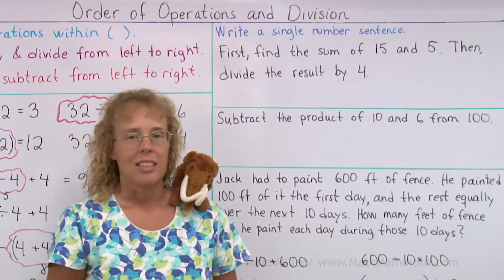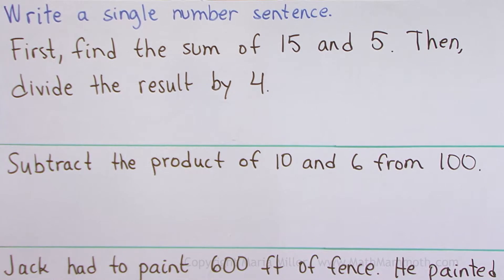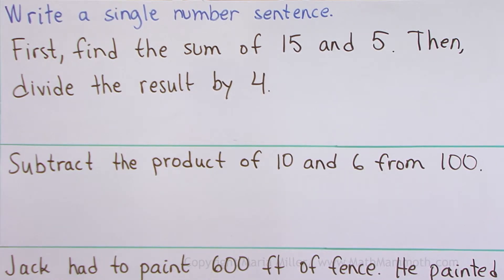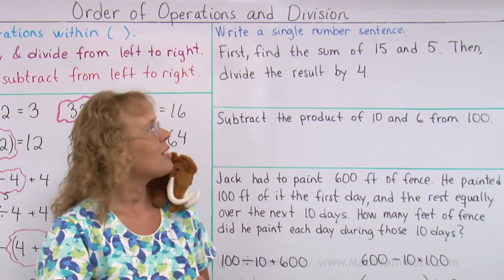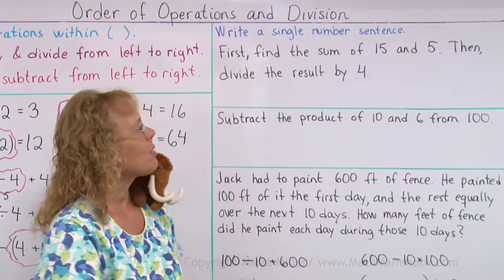Write a single number sentence or a single expression, okay? First, find the sum of 15 and 5, then divide the result by 4. In other words, don't write two different calculations. Write a single calculation for all of that.